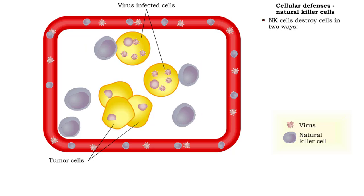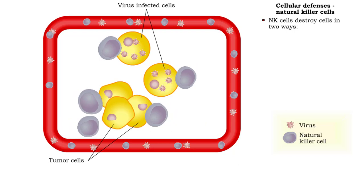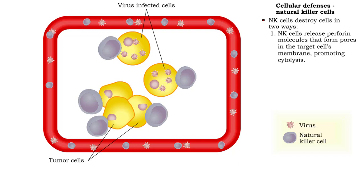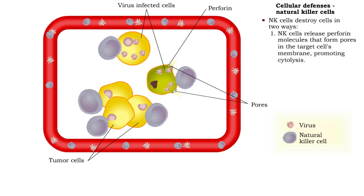A natural killer cell can destroy a target cell on contact in two ways. First, it produces perforin, a protein that punches holes in the plasma membrane of the target cell. This brings on cytolysis, the bursting of the cell.